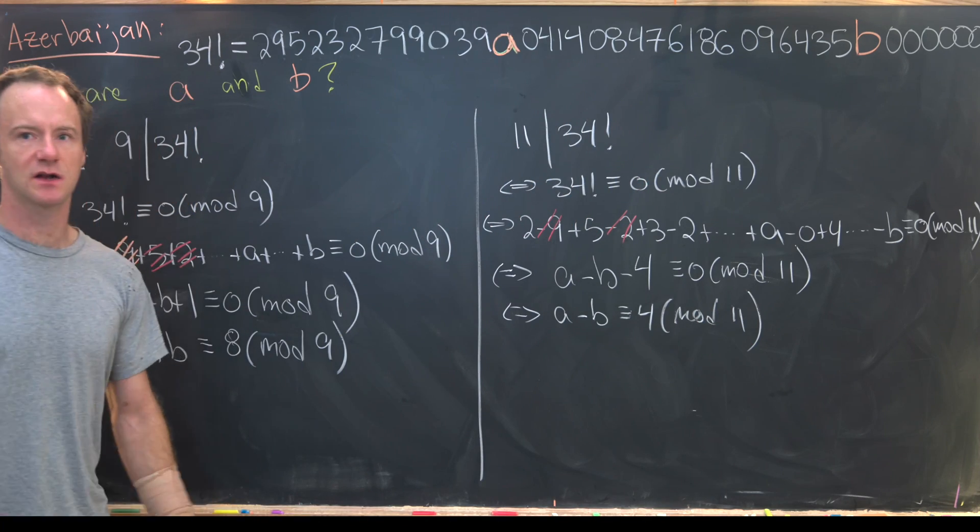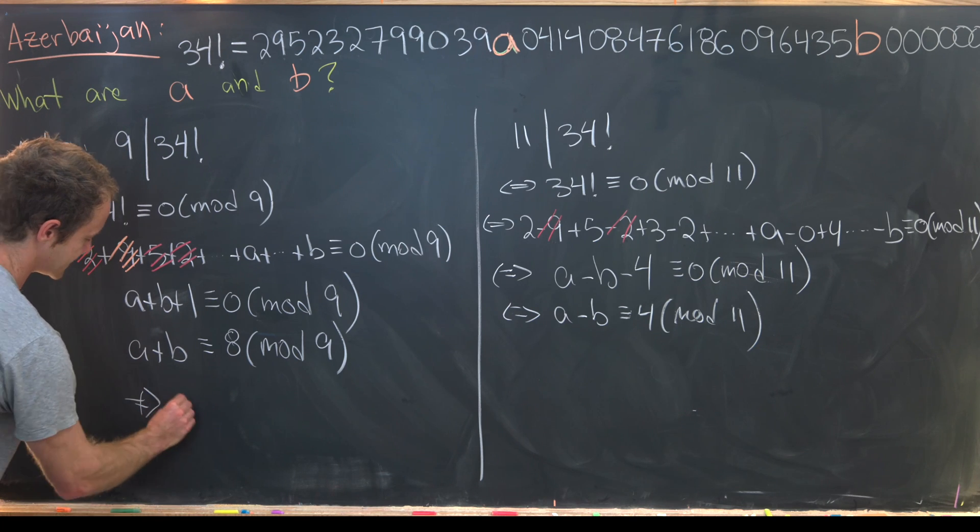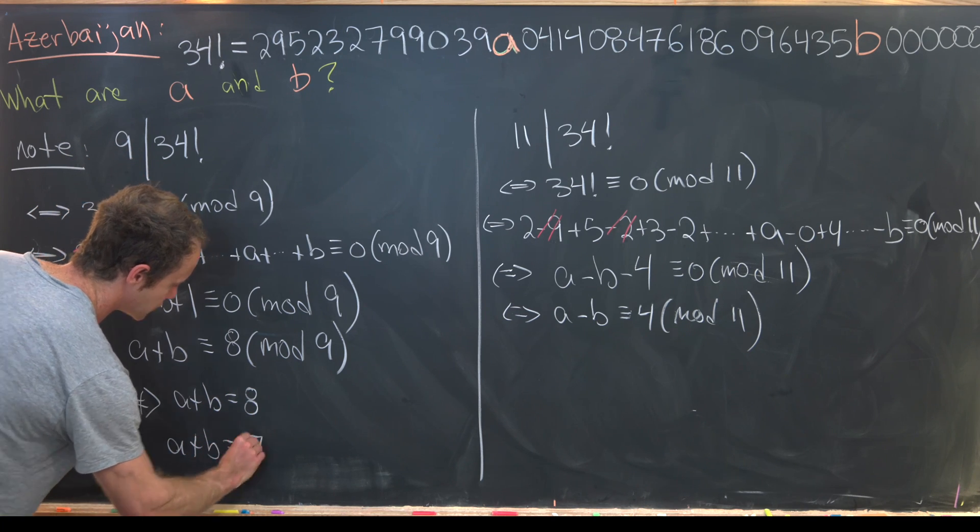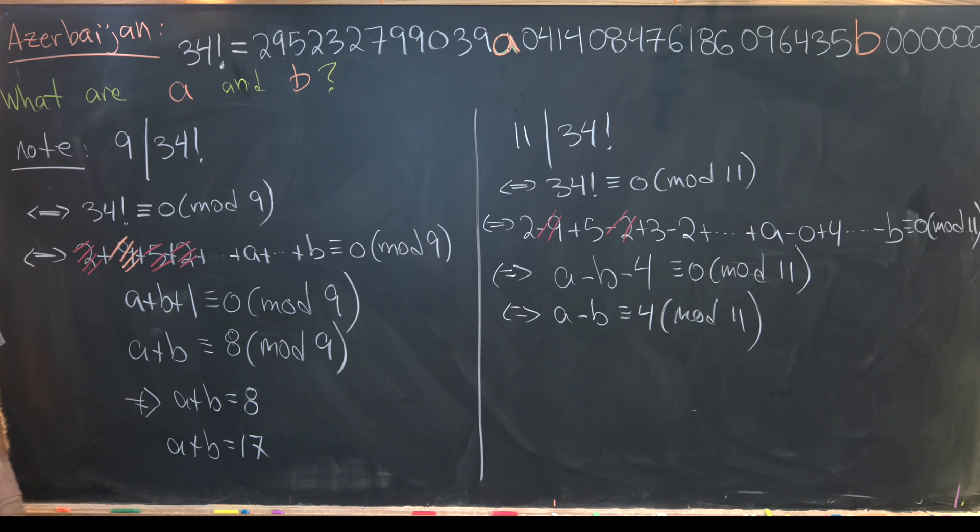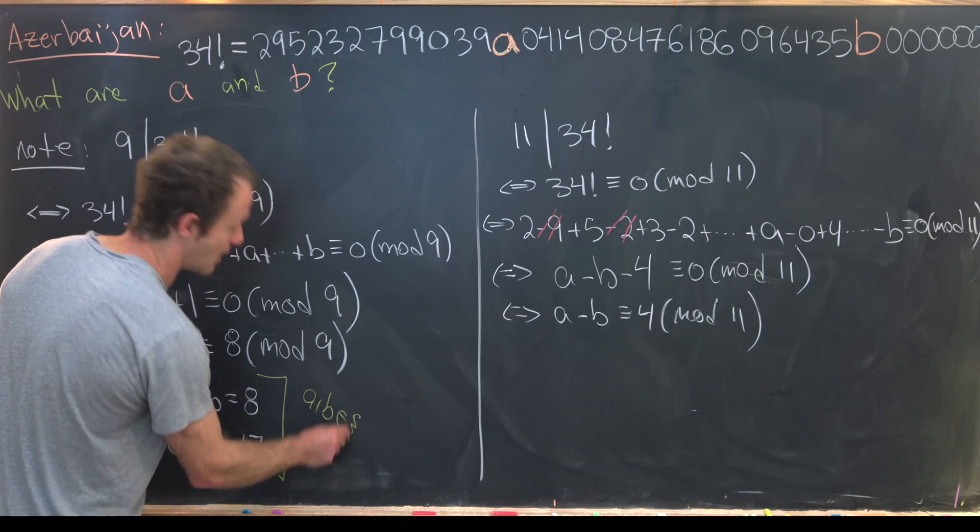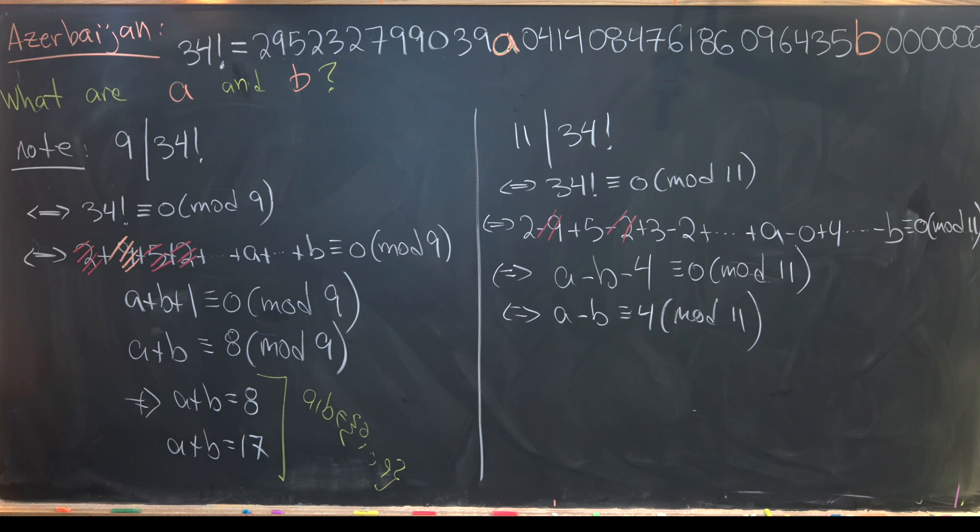Now we want to take these congruences and turn them into equations. So I'll write these down and then we'll talk through them. So this tells us that a plus b is either equal to 8 or a plus b is equal to 17. So in general there'll be infinitely many solutions to this type of congruence. You'll have 8, 8 plus 9, 8 plus 9 plus 9 and similarly 8 minus 9, 8 minus 9 minus 9 and so on and so forth. But we know that these are the only possible values 8 and 17 and that's because a and b are forming digits of this number. So they're between 0 and 9. So those are the only achievable values.